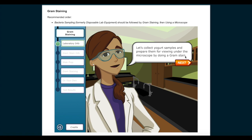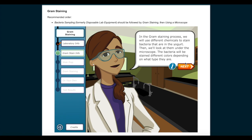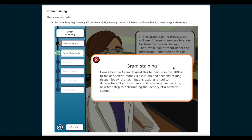Let's collect yogurt samples and prepare them for viewing under the microscope by doing a Gram stain. In the Gram staining process, we will use different chemicals to stain bacteria that are in the yogurt. Then we will look at them under the microscope. The bacteria will be stained different colors depending on what type they are. Gram staining. Hans Christian Gram devised this technique in the 1880s to make bacteria more visible in stained sections of lung tissue. Today, the technique is used as a tool to differentiate Gram positive and Gram negative bacteria as a first step to determining the identity of a bacterial sample.